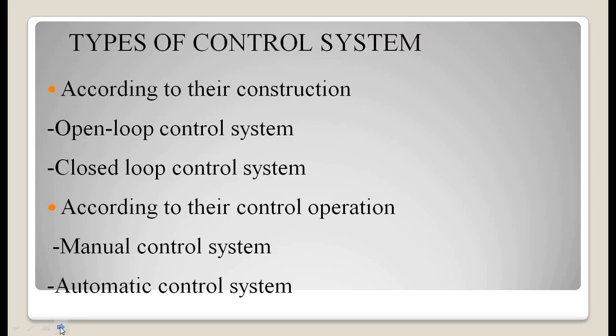Now, types of control systems. According to their construction, we can have open loop control systems and closed loop control systems. According to their control operation, we can have two types: manual control systems and automatic control systems.